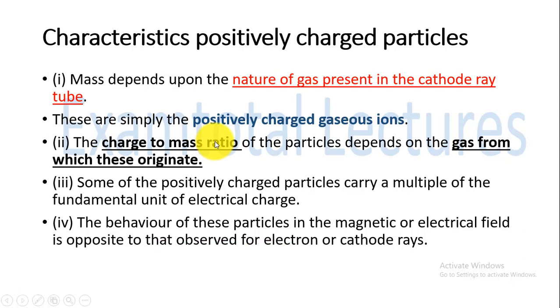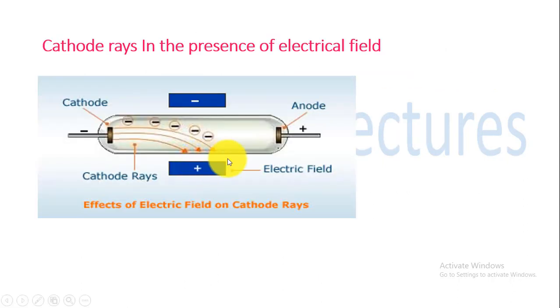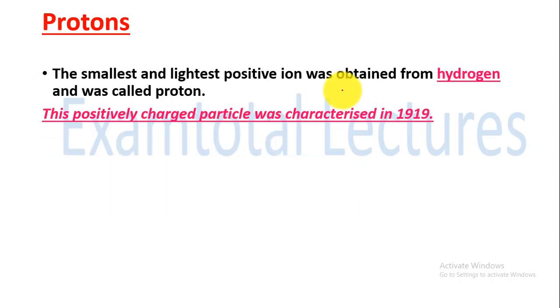These are simply positively charged gaseous ions. The charge to mass ratio of the particles depends on the gas from which they originate. Some of the positively charged particles carry a multiple of fundamental units of the electrical charge. In cathode rays we saw certain behavior, but in anode rays the behavior is opposite. Cathode rays strike the positive side, whereas these rays will strike the negative side. So these are the anode rays. The movement is different, opposite to that of the cathode rays.